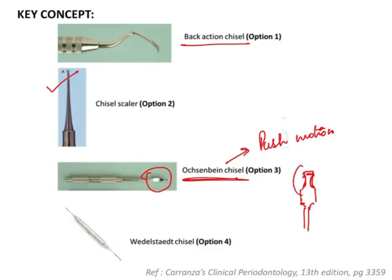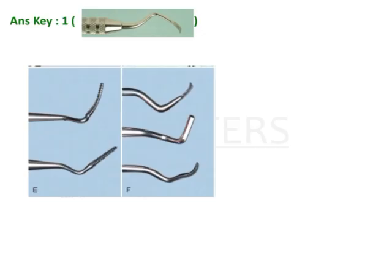This is very important because this is a neat question which was asked. How do you identify the Ochsenbein chisel? The Wedelstaedt chisel is used in conservative dentistry and that is not important for us over here.